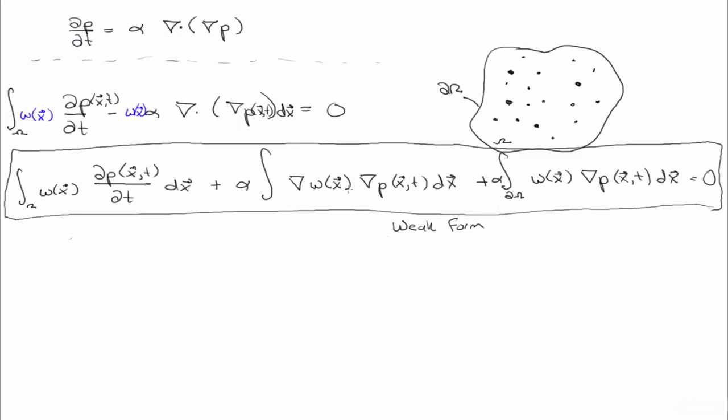In the weak form, and the reason it's called the weak form, is because we've weakened the continuity requirement on p. Now we just have the gradient of p, and using this Green identity, we've shifted some of the differentiation, or some of the continuity requirement that was on p, onto this other function w.